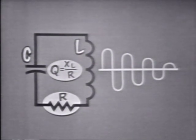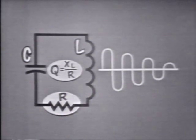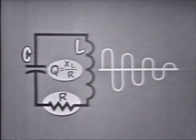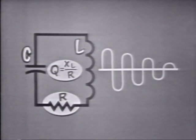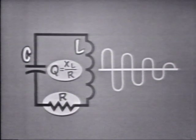Thus the higher the Q, the longer the circuit will oscillate because there's less energy dissipated in the circuit. But even the highest quality components offer some resistance, so to generate a waveform of constant amplitude, energy must be added to the circuit at the same rate that it's being lost — in much the same way that we fed energy to the mechanical oscillator.